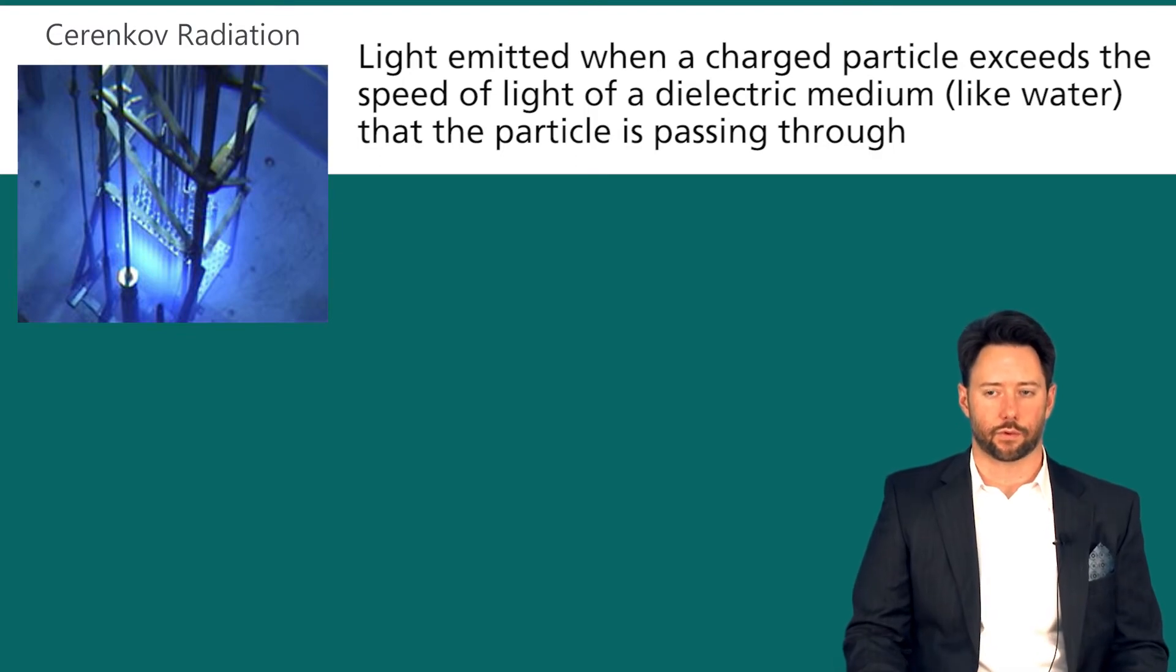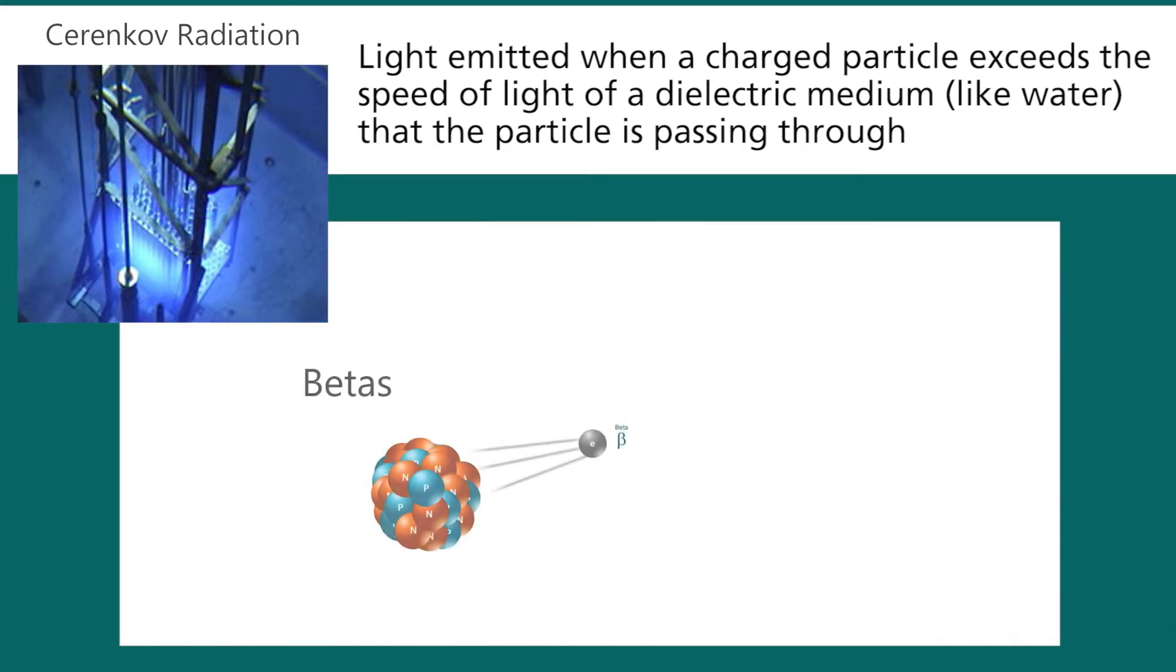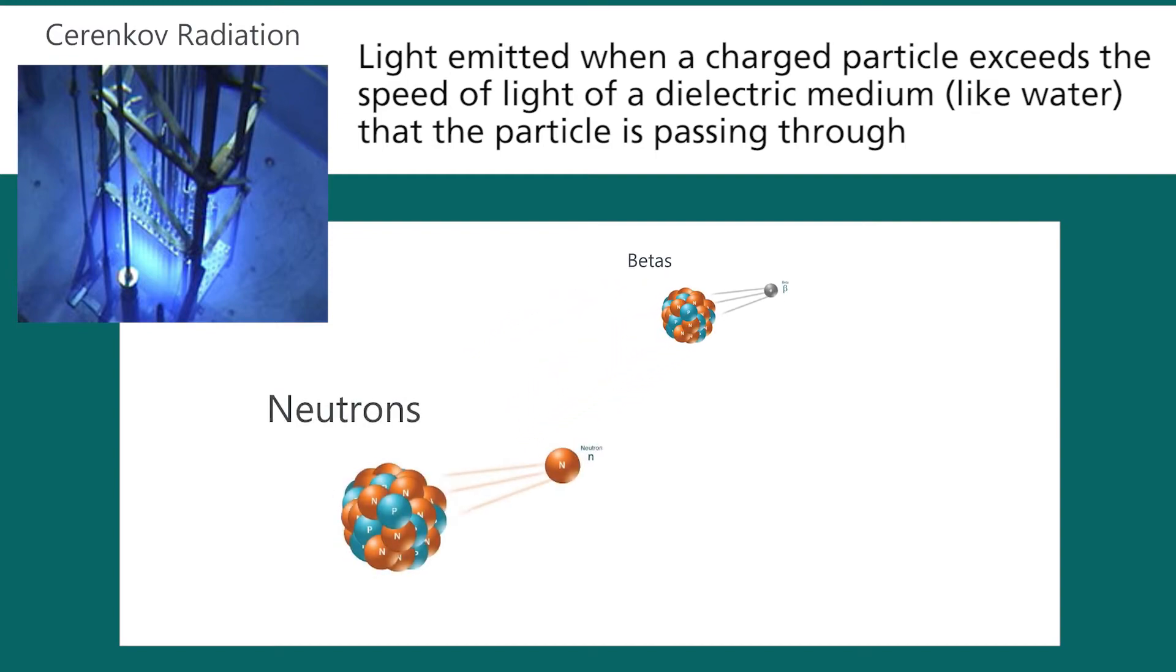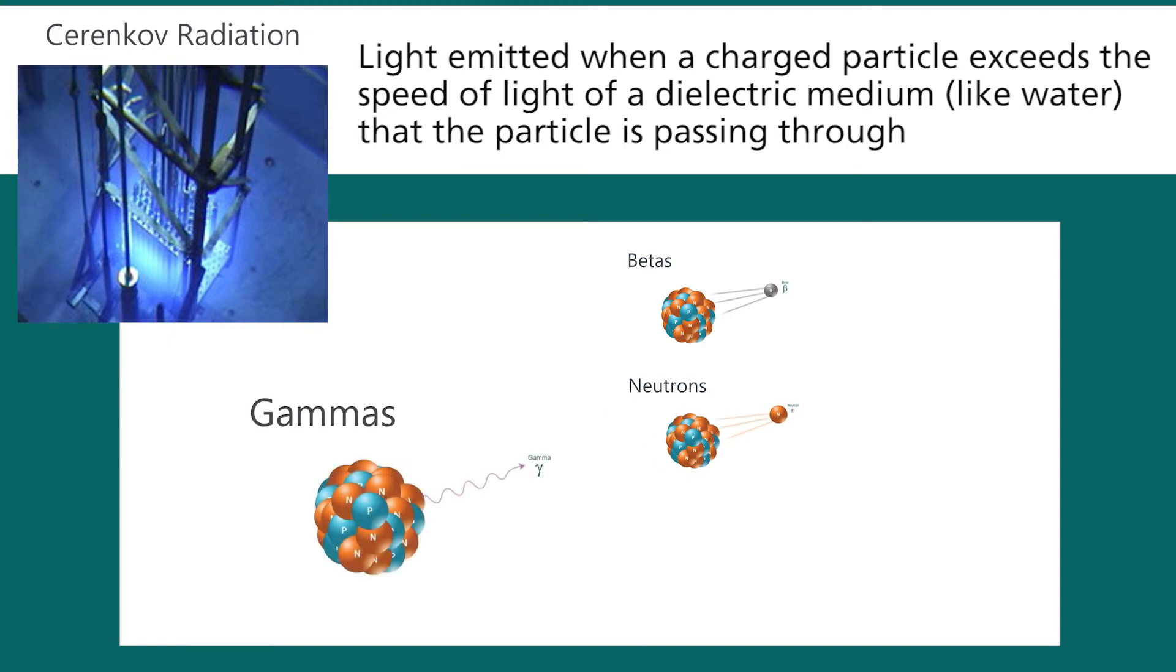There are several sources of Cherenkov radiation in spent fuel. The first is beta radiation, and betas are just electrons that are emitted and so they produce Cherenkov radiation directly. Other indirect sources of Cherenkov radiation include neutron radiation and gamma radiation. As it turns out, the most significant source of Cherenkov radiation comes from the gammas indirectly. So let's take a look at that process specifically.